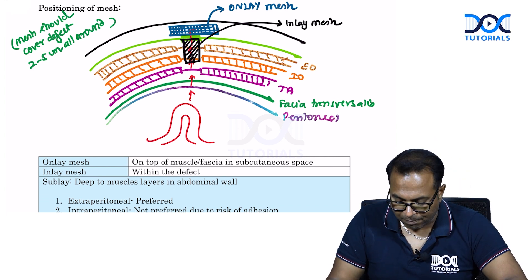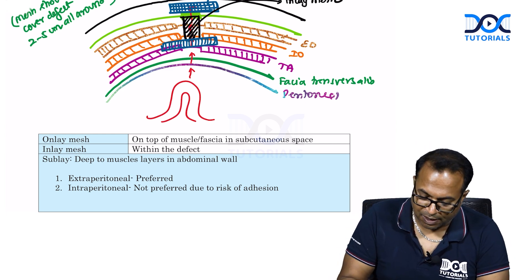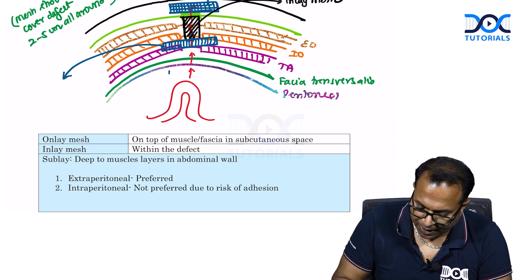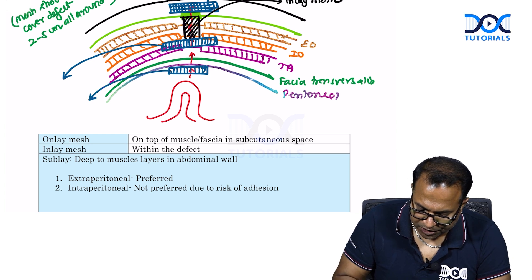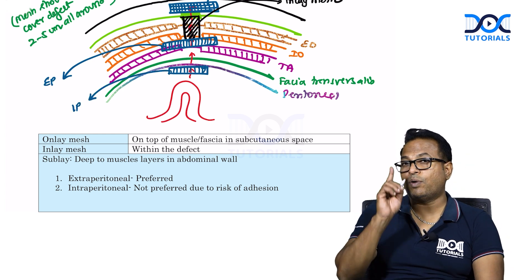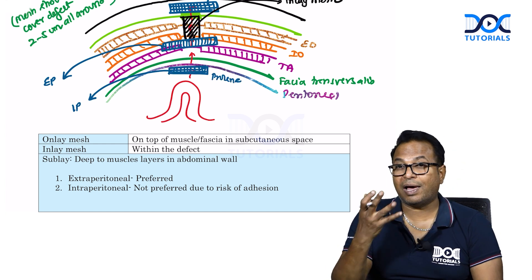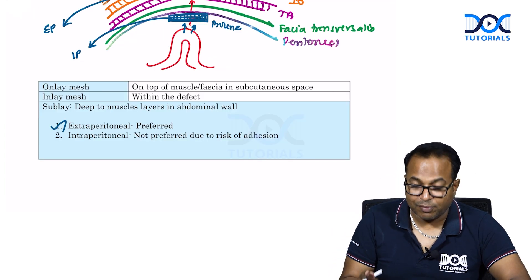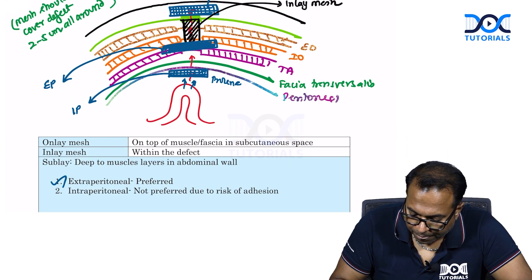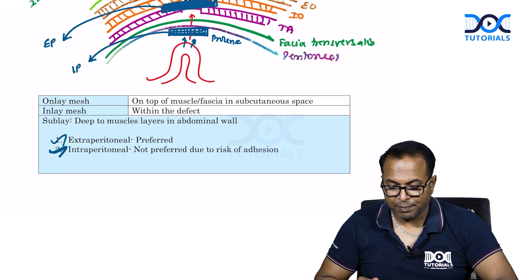Sublay mesh is placed deep to the muscles in the abdominal wall. Sublay mesh can be extraperitoneal (between the muscle layers) or intraperitoneal. Intraperitoneal sublay with prolene mesh should never be done because prolene intraperitoneal causes bowel adherence. Extraperitoneal sublay mesh, kept between the muscle layers, is preferred. Never do intraperitoneal prolene mesh due to the risk of adhesions.